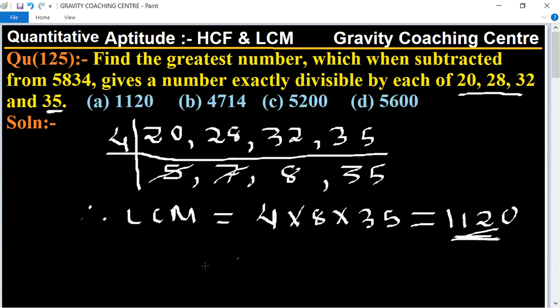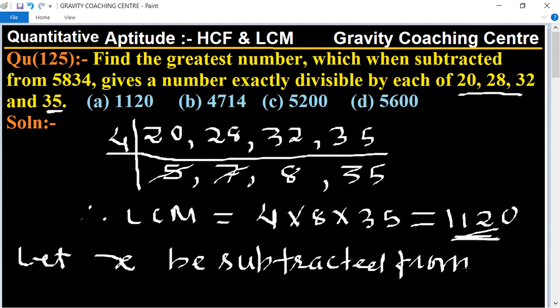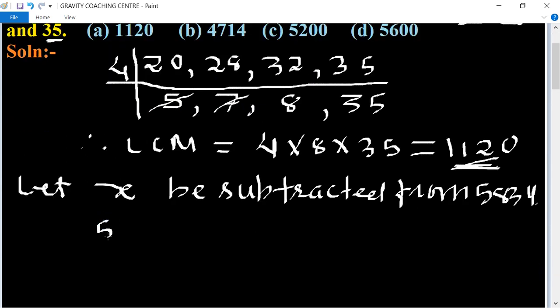Let x be subtracted from 5834. So 5834 minus x equals 1120.